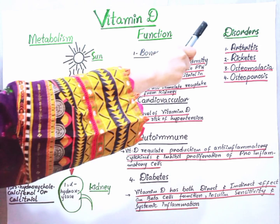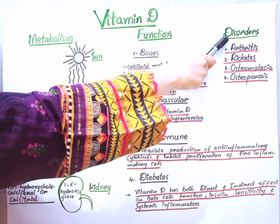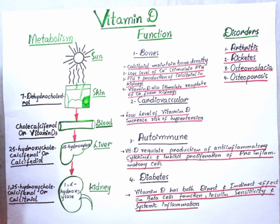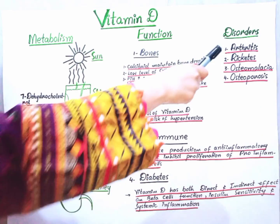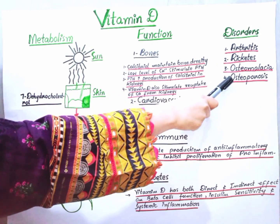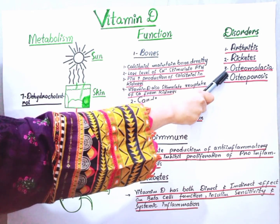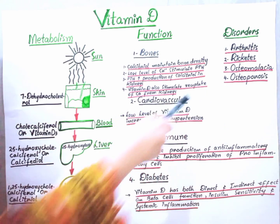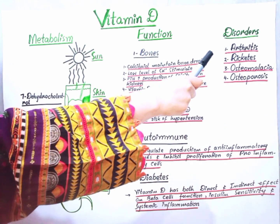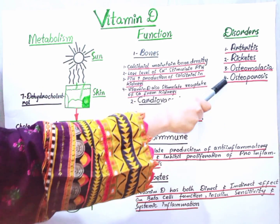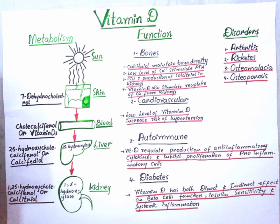Finally, we have the disorders. The deficiency of vitamin D causes arthritis, rickets, osteomalacia, and osteoporosis. We will discuss all these disorders in our next lecture.